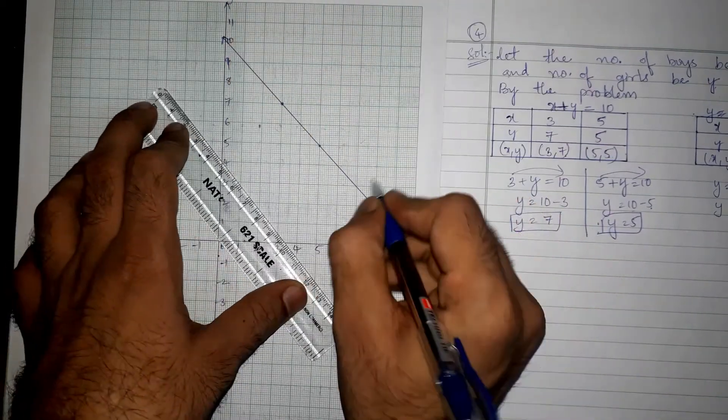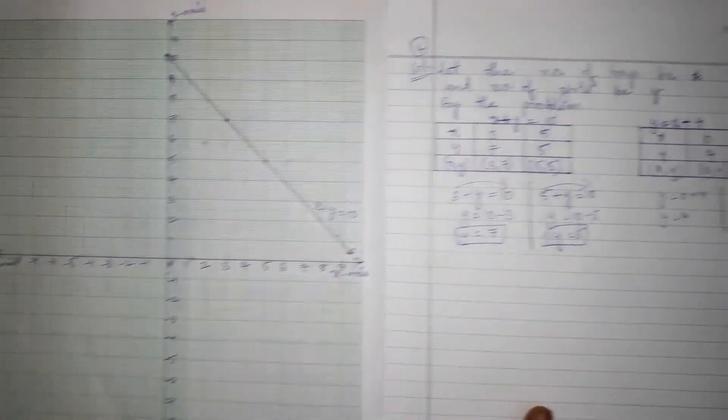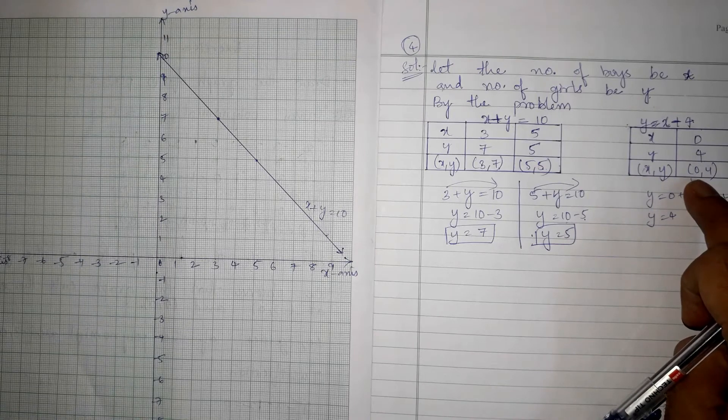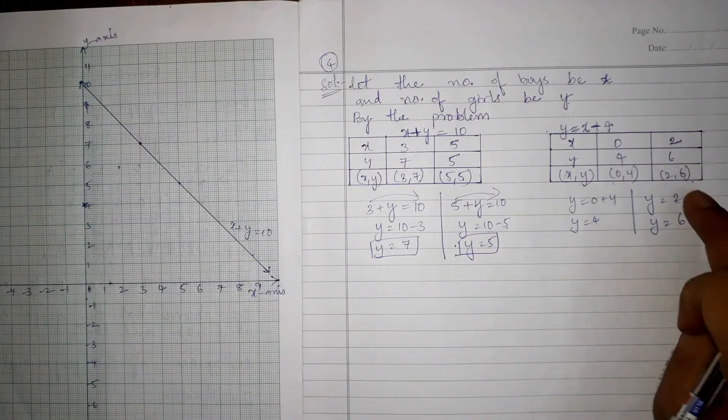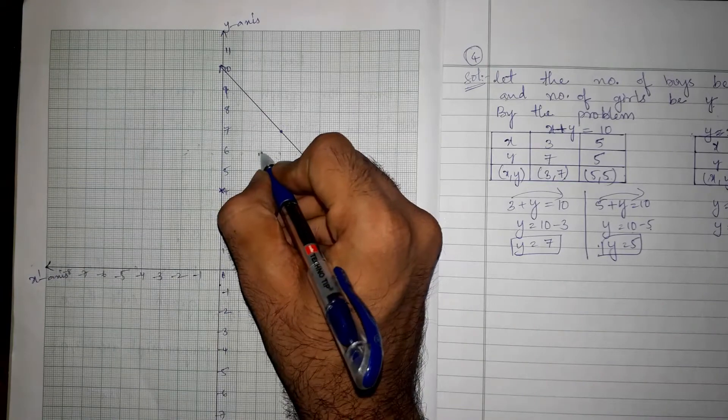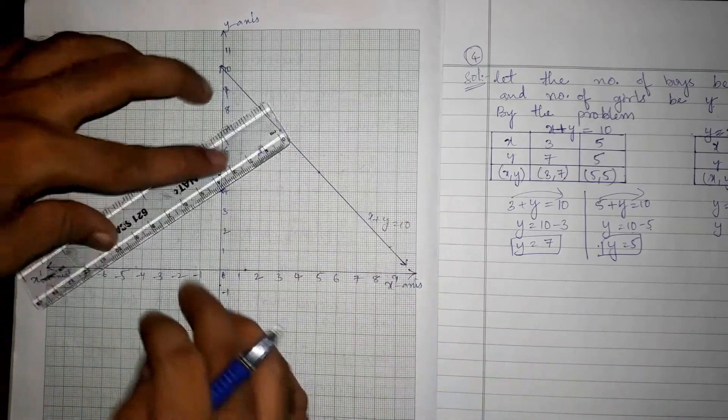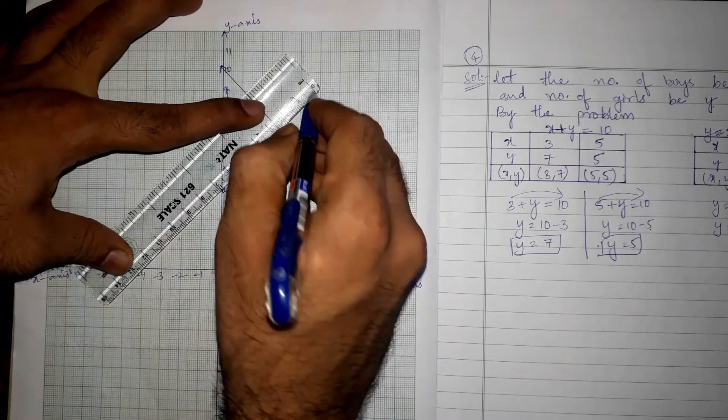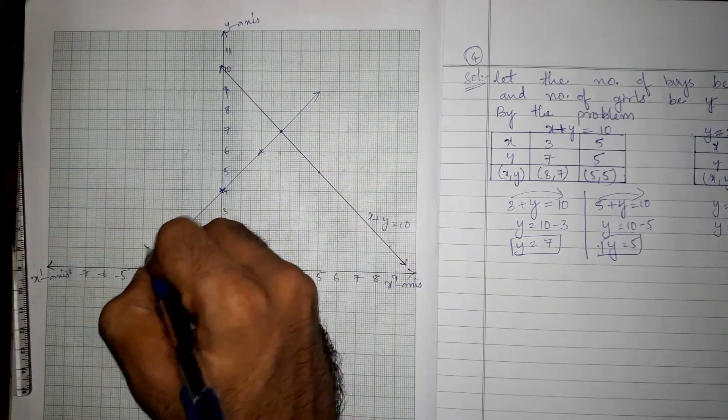So what is the name of this line? x plus y is equals to 10. Next equation is - next points are 0 comma 4, 0 comma 4, and 2 comma 6. So 2 comma 6.